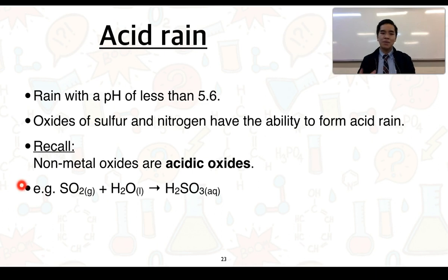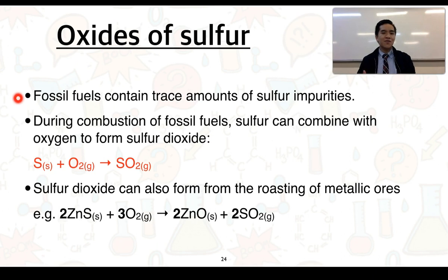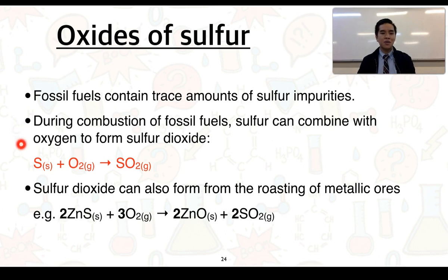We saw that with carbon dioxide forming carbonic acid. Sulfur dioxide can also react with water and produce sulfurous acid as its oxy acid. How does sulfur actually contribute to acid rain? Fossil fuels contain trace amounts of sulfur impurities, and during the combustion of fossil fuels like petrol, sulfur can combine with oxygen to form sulfur dioxide — our non-metal or acidic oxide — so S + O₂ → SO₂.